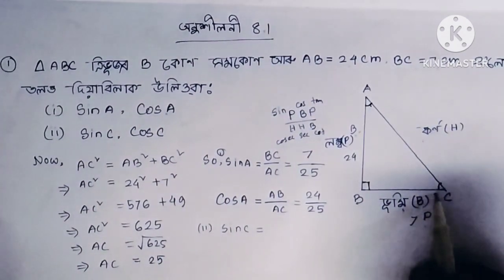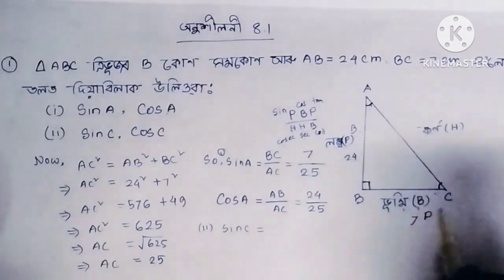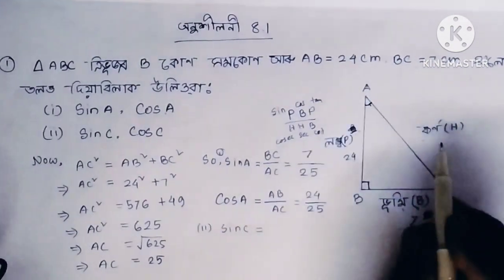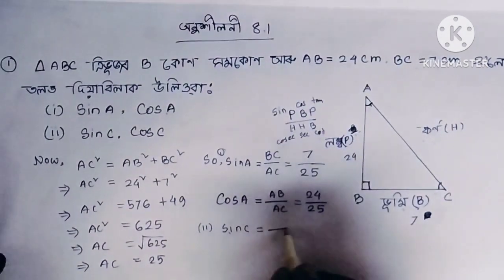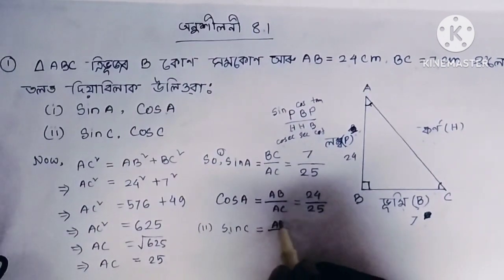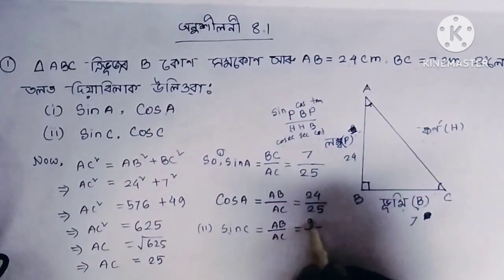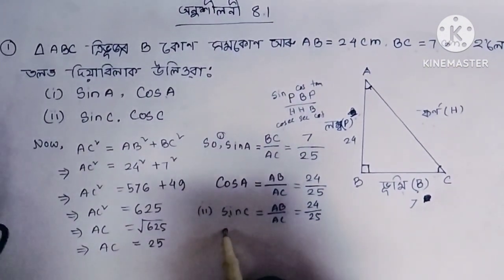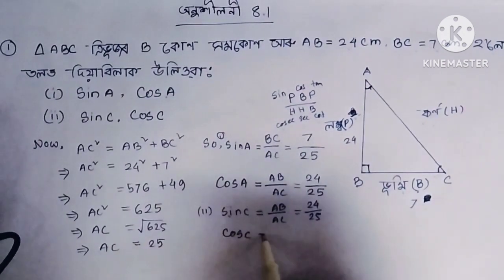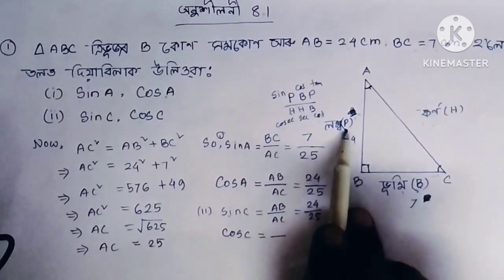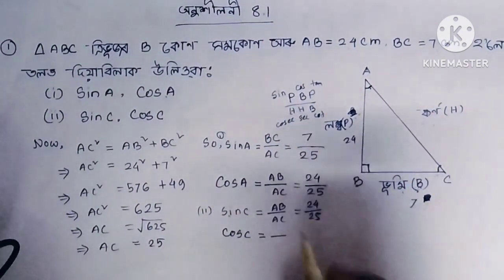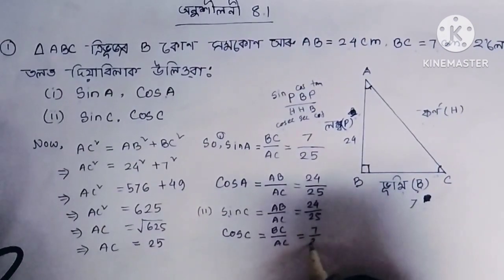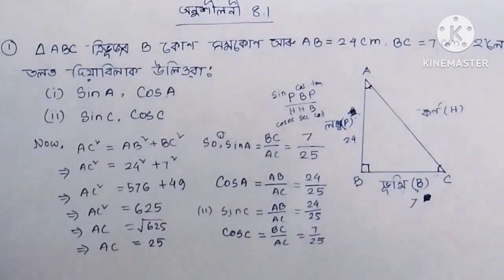For sin C: the base (bhoomi) and perpendicular (lomba) are identified. Sin C equals P by A, where P is AB. AB by AC equals 24 by 25. For cos C, the base is BC, so cos C equals BC by HC, which is 7 by 25. These are easy and simple to solve.